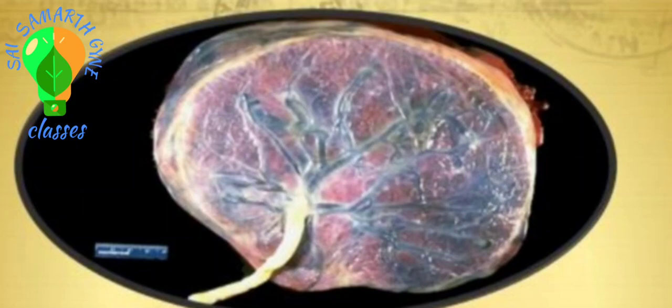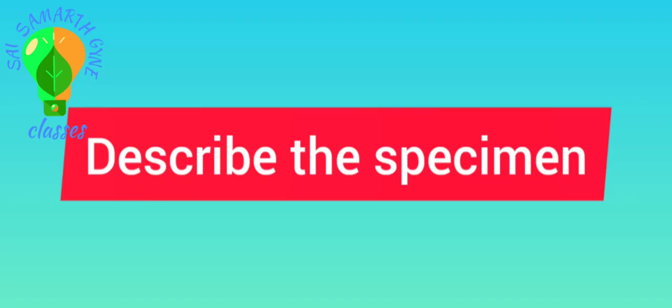This is a rounded disc-shaped structure which is reddish in color. The superior surface is shiny. Underneath the surface, multiple blood vessels are visible which are repeatedly branching, and from the superior surface, almost from the center of it, a cord-like structure appears to be arising. So this is most probably the fetal surface of the normal placenta with umbilical cord attached to it.